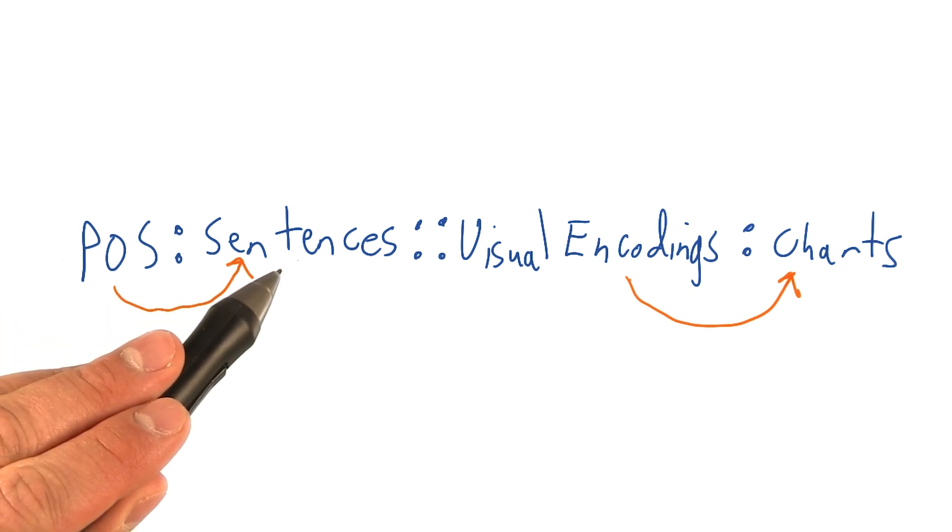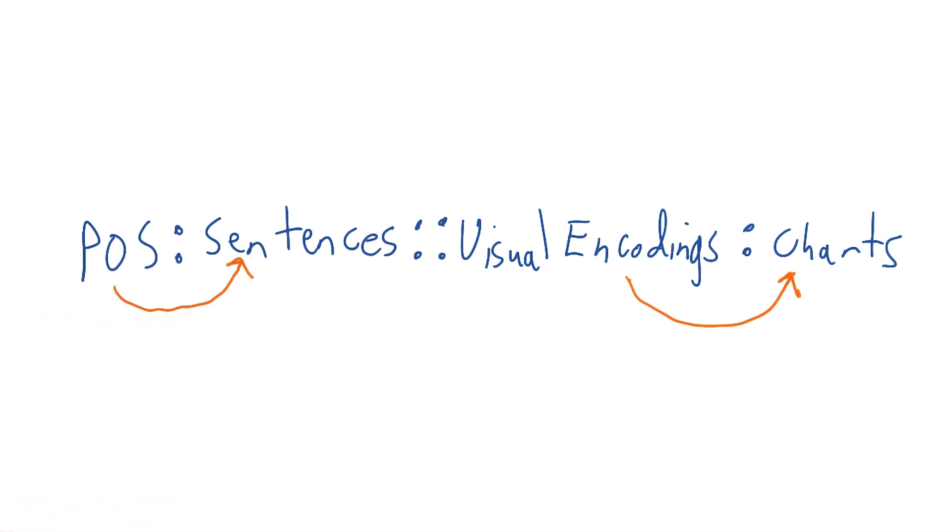Just as sentences are composed of parts of speech, which each contribute differently to the overall message of the sentence, charts are composed of different visual encodings, each of which most effectively convey a specific aspect of the underlying data.